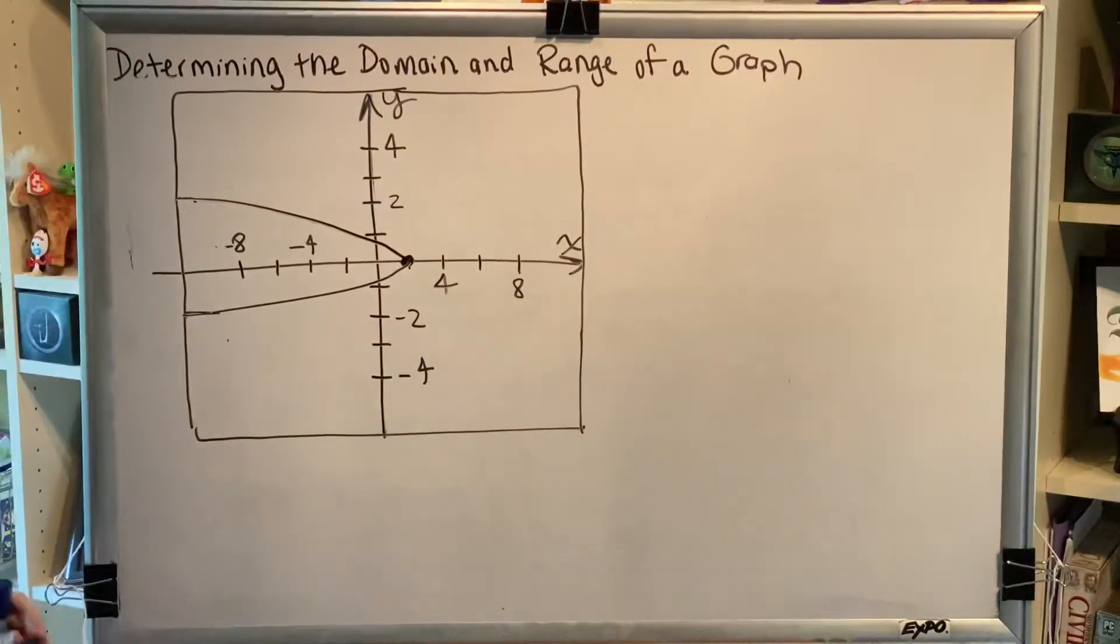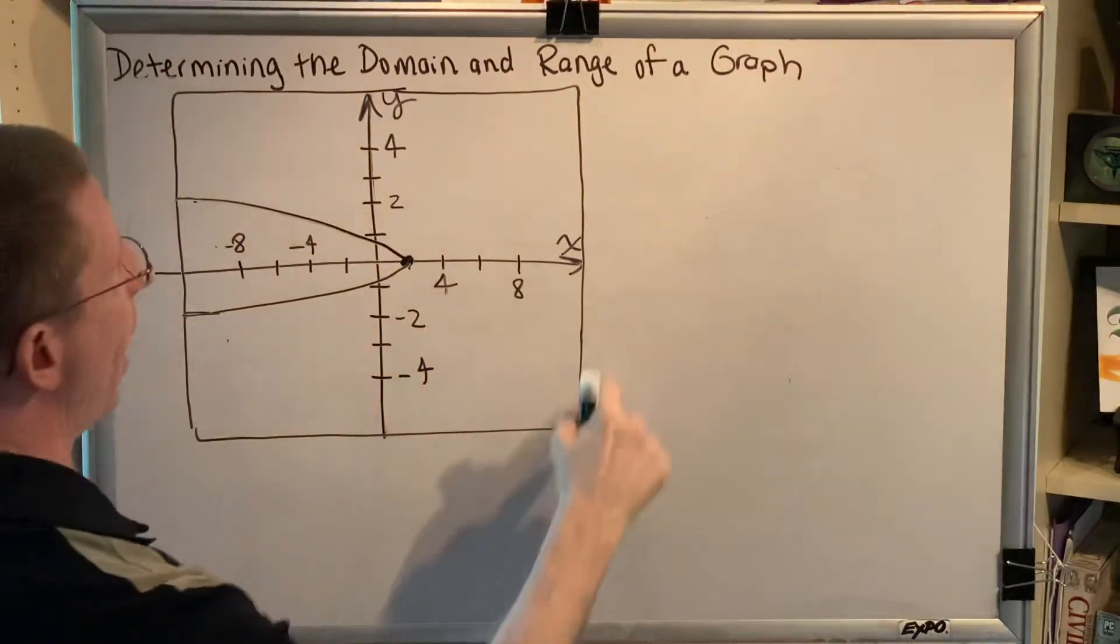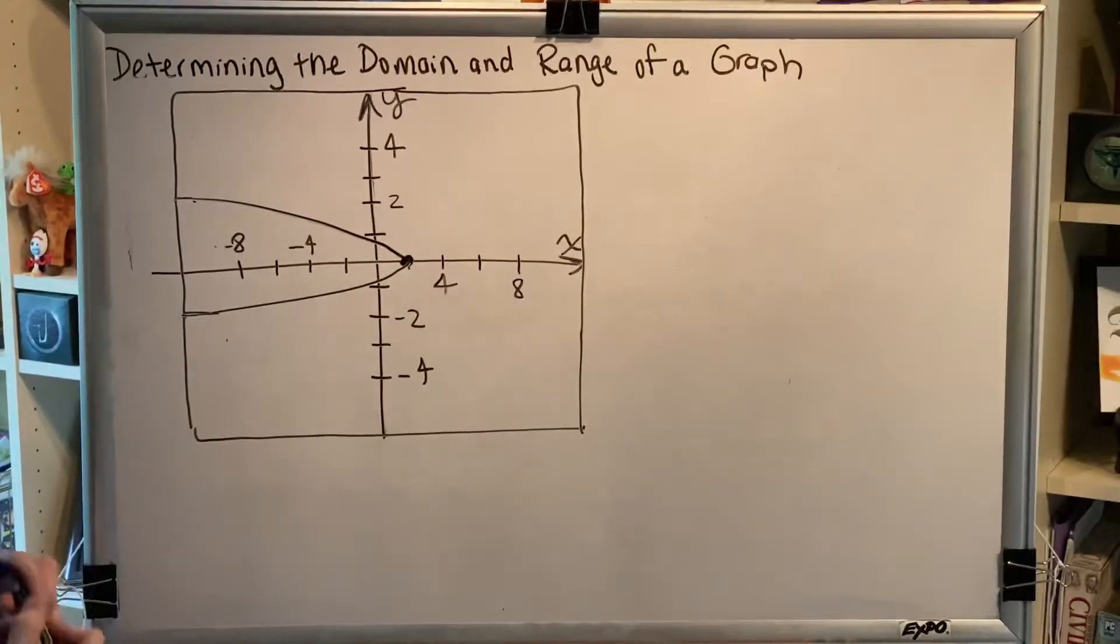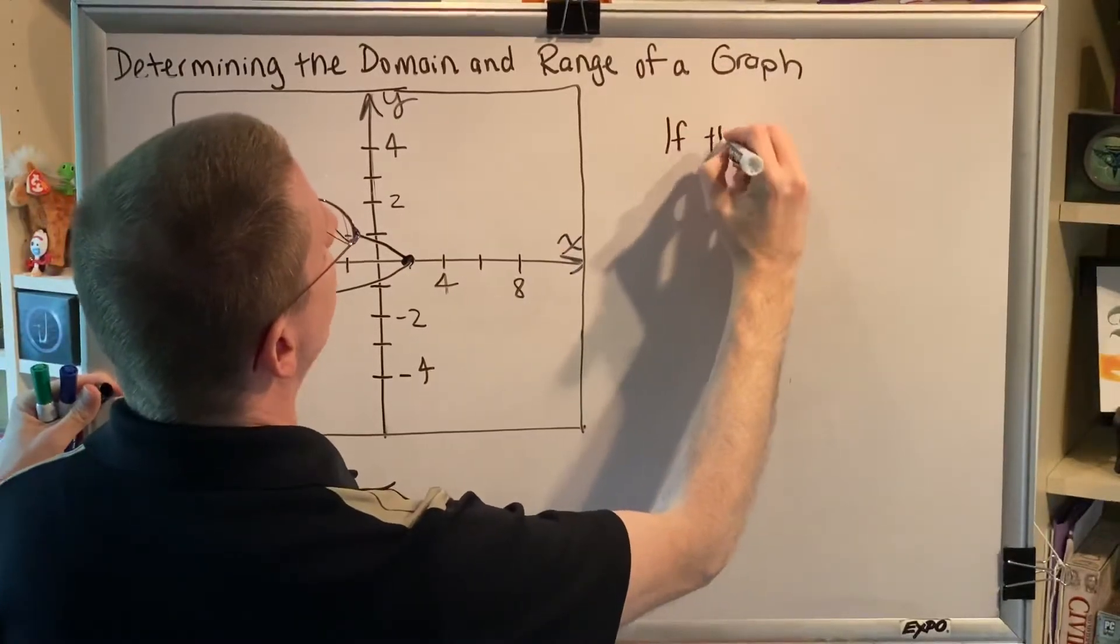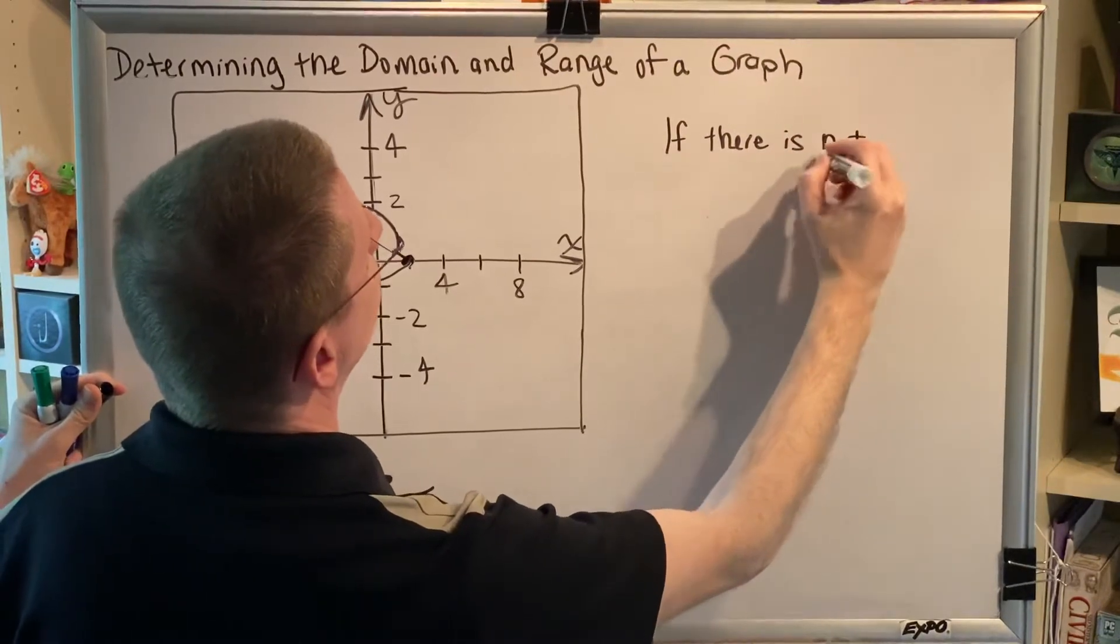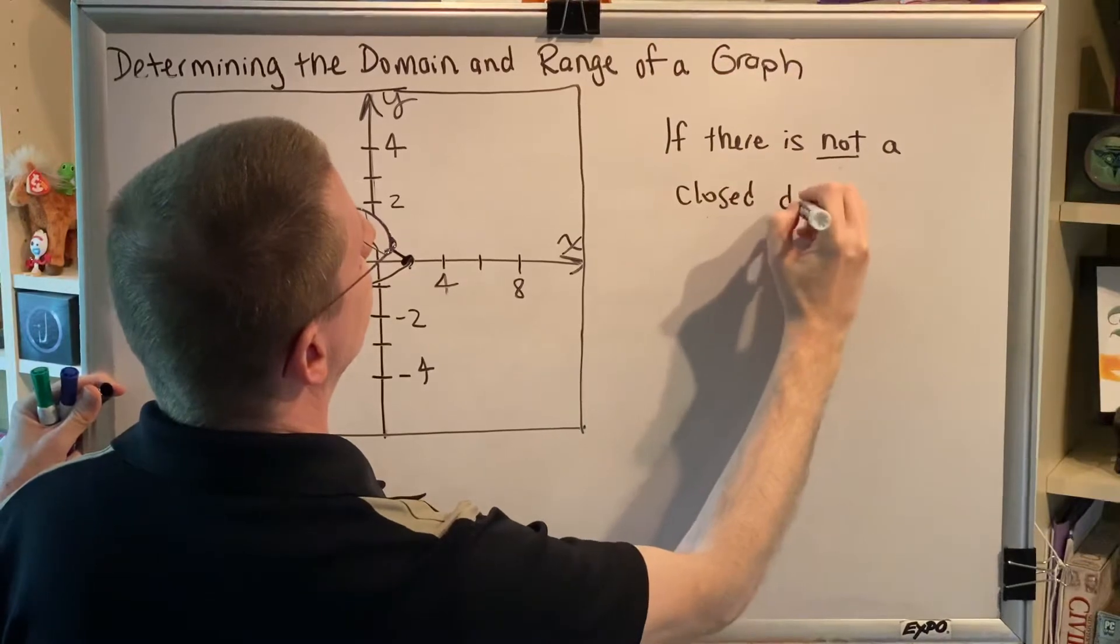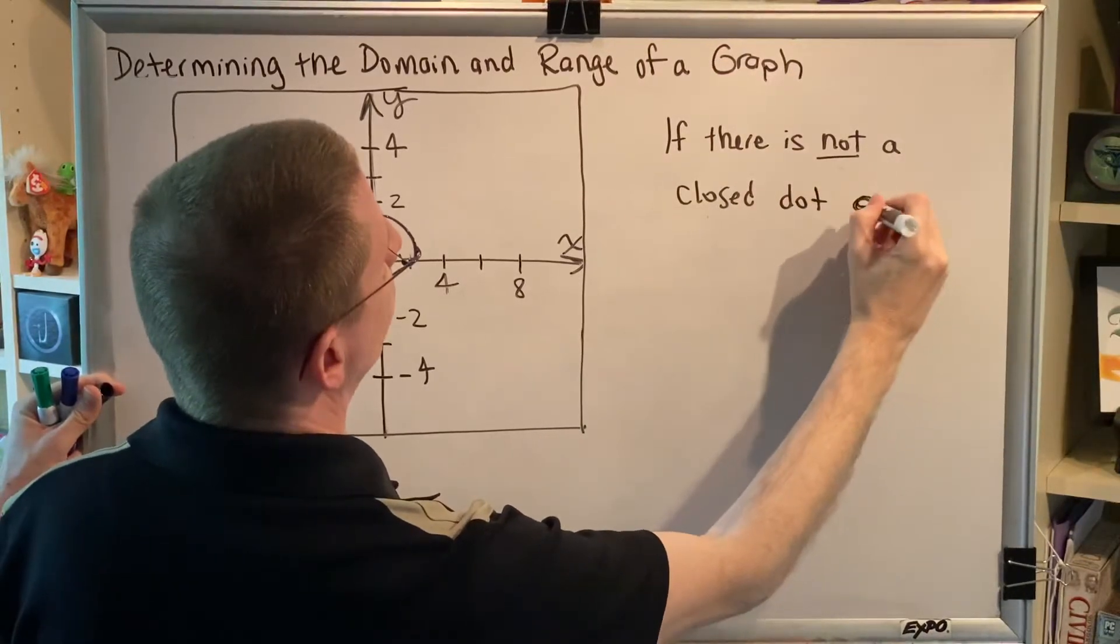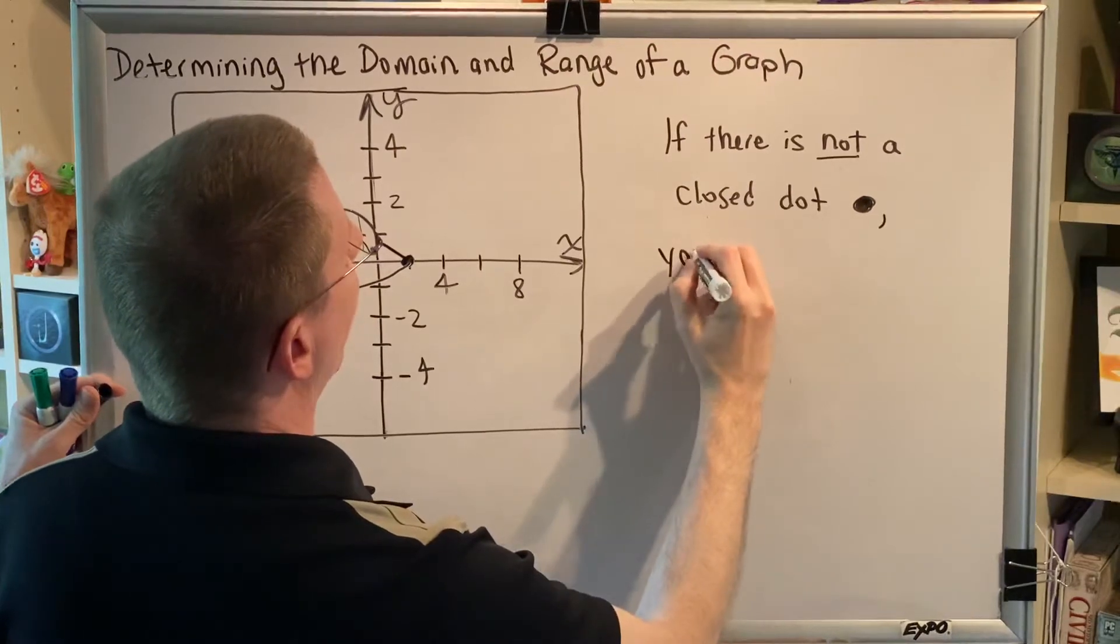So the lesson here is very simple. When your line or your curve reaches the outer edges of the graph, if there is not a closed dot, you are to assume there is an arrow at the boundary.